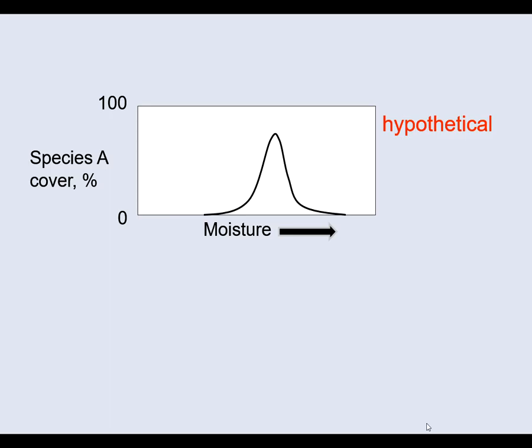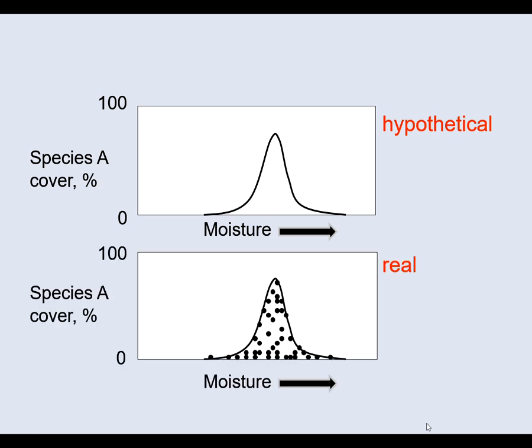Imagine we have recorded the abundance of a single species at sites along an environmental gradient. For example, we could measure the cover of a plant species along a moisture gradient. The species abundance rises to its optimum along that gradient then falls to zero. Real data might look like this. Even at a species optimum it often has lower abundance than its potential or even a zero.